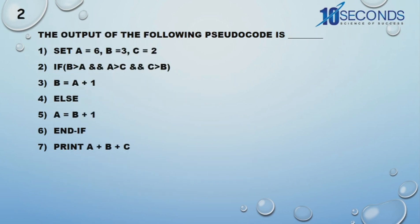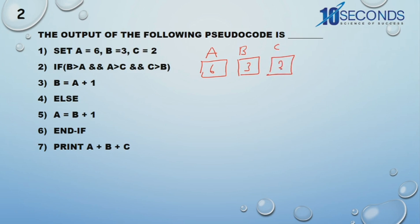It's very simple. Now the second pseudocode: set A equal to 6, B equal to 3, and C equal to 2. If B greater than A — that is 3 greater than 6 — the condition is false, which means 0.